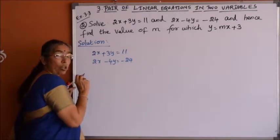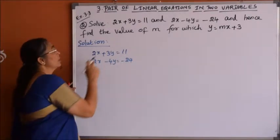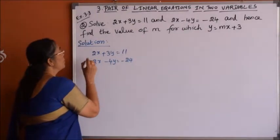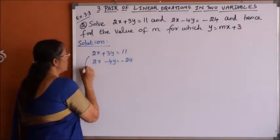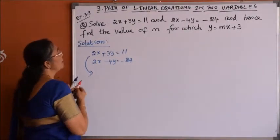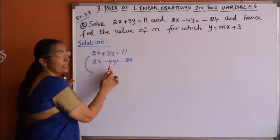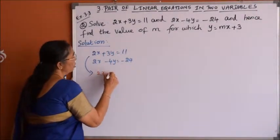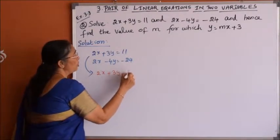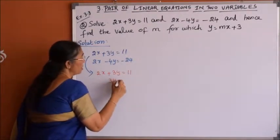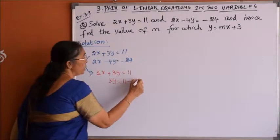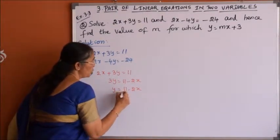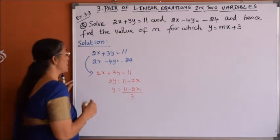Now we solve these two linear equations by the method of substitution. From the first equation we find the value of y and substitute it in the second equation. So from the first equation, 2x plus 3y equals 11, we get 3y equals 11 minus 2x, therefore y equals 11 minus 2x divided by 3.